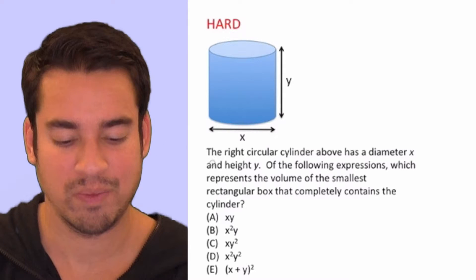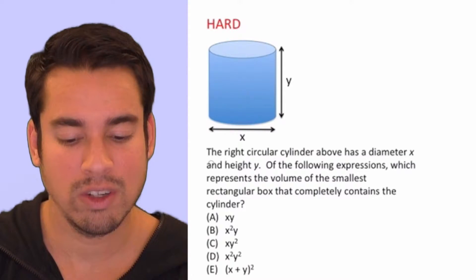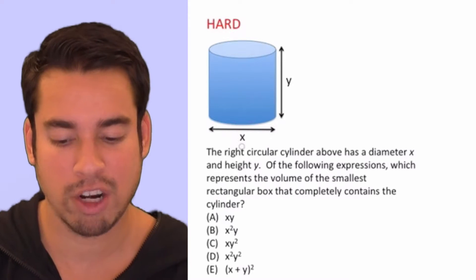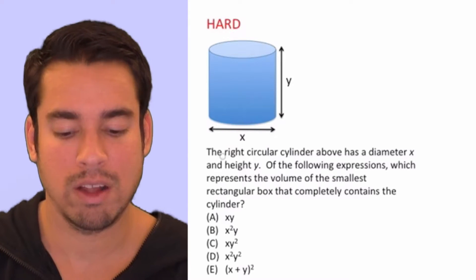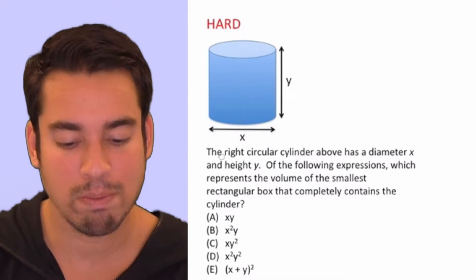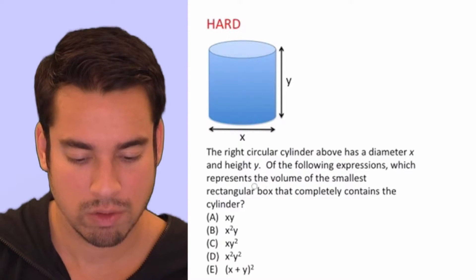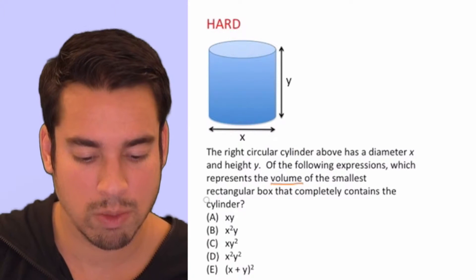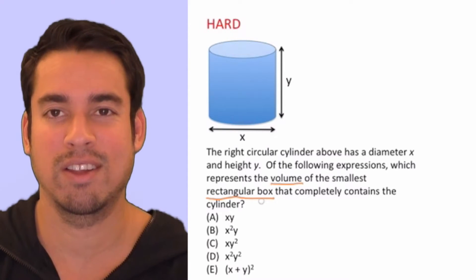Now, let's read the question. It says the right circular cylinder above has a diameter X and height Y. Of the following expressions, which represents the volume of the smallest rectangular box? First of all, we want volume.